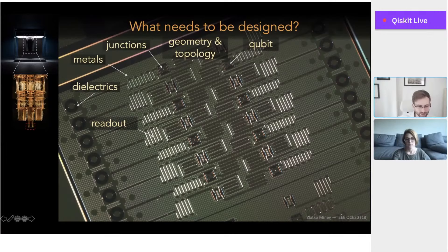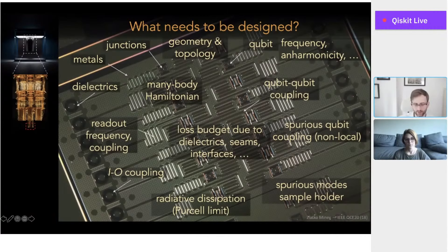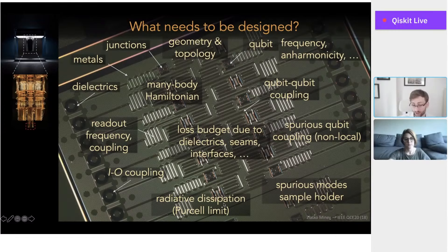The constituent elements of a quantum chip include readout resonators, coplanar waveguides, dielectrics, metals, junctions, geometries, topology, and qubits. But you also have to design their frequencies and anharmonicities, the qubit-qubit coupling, input-output coupling, spurious qubit couplings, unwanted interactions, modes of the sample holder, radiation dissipation, loss budget, and so forth. Many of these constraints are conflicting and at odds with each other, and they also don't tune independently. That's why we want to make this process as easy as possible to free up the designer to be as creative and quick as possible.